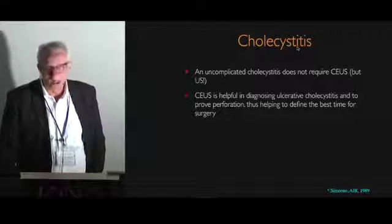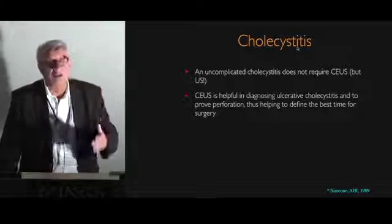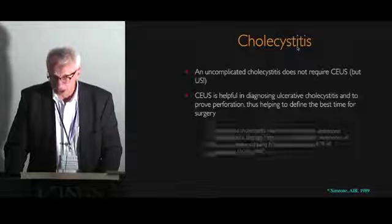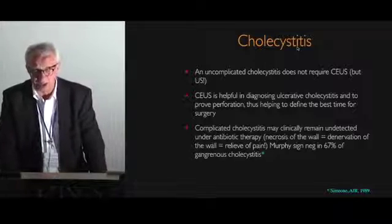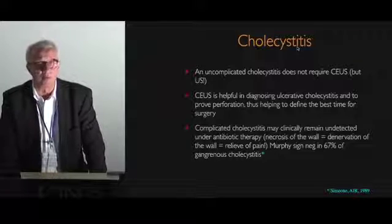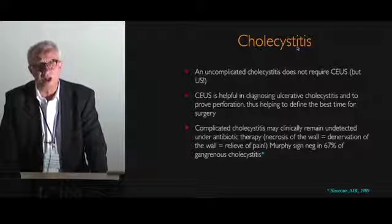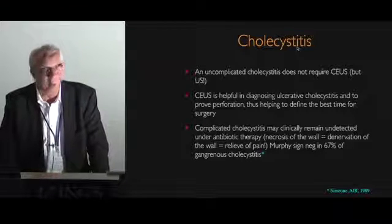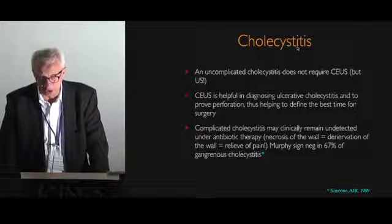I think this is a very important point. A patient comes into the hospital and the question is: when should we go for surgery? A complicated acute cholecystitis may clinically remain undetected under antibiotic therapy. We see patients under antibiotic therapy who have no complaints anymore, although we have a necrosis of the wall — we have gangrenous cholecystitis and a perforation.